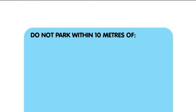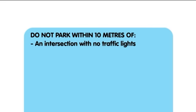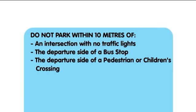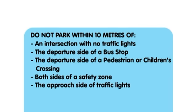You are not allowed to park within 10 metres of an intersection with no traffic lights, the departure side of a bus stop, pedestrian or children's crossing, both sides of a safety zone, or the approach side of traffic lights not at an intersection.